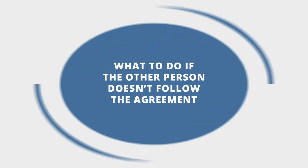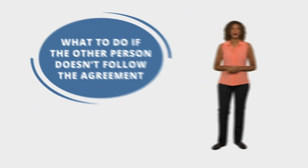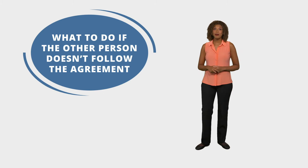Let's talk about what to do if the other person doesn't follow the agreement. When an agreement is not being followed, try to communicate with the other person. Understanding their situation may help solve the problem. If the other person is willing, you can return to mediation.